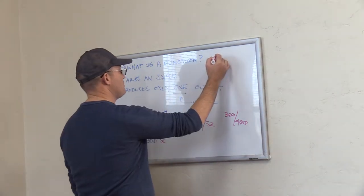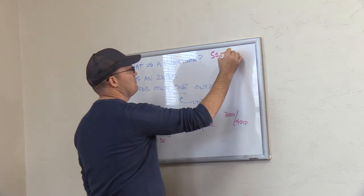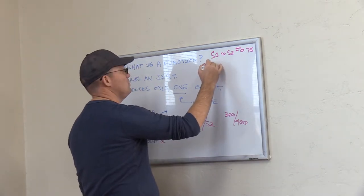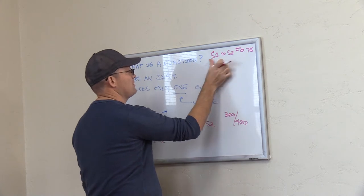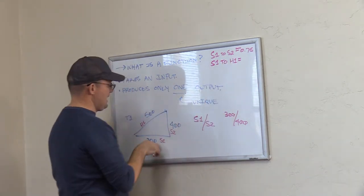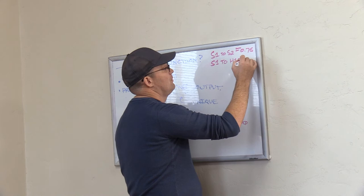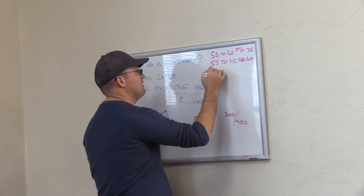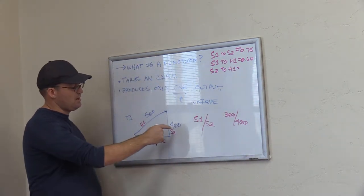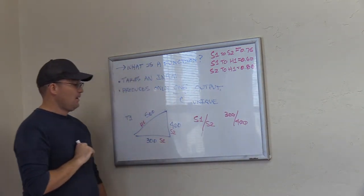0.75. So I'm going to just write up here, S1 to S2, that relationship is equal to 0.75. Now let's do S1 to H1. So somebody take 300 divided by 500. What's that decimal? 0.6. All right. Then let's take S2 to H1. Take 400 divided by 500. 0.8, thank you.